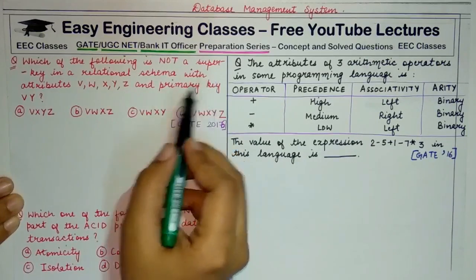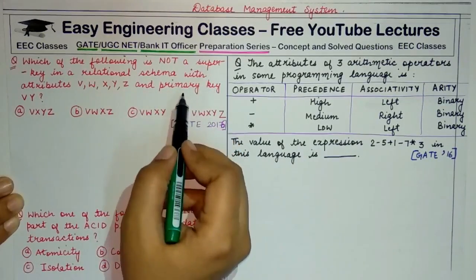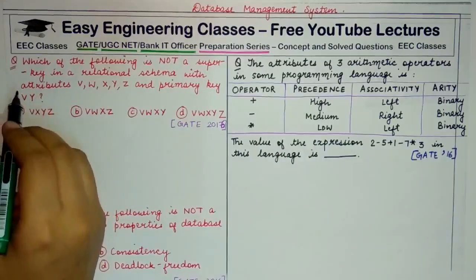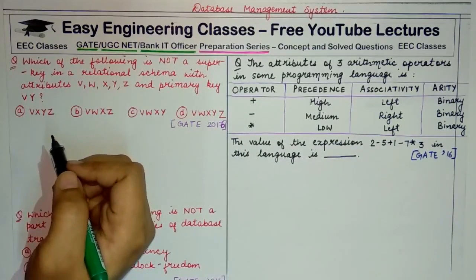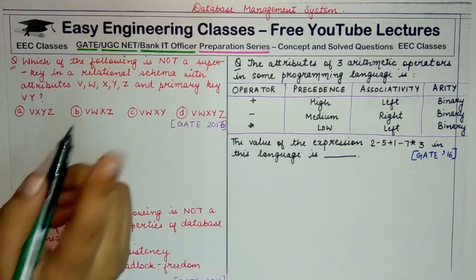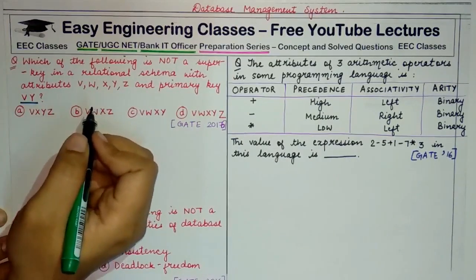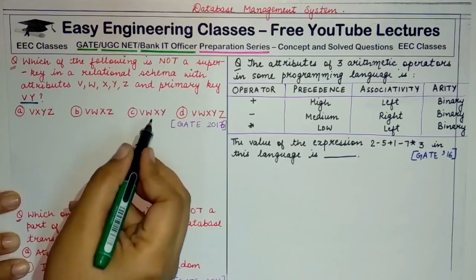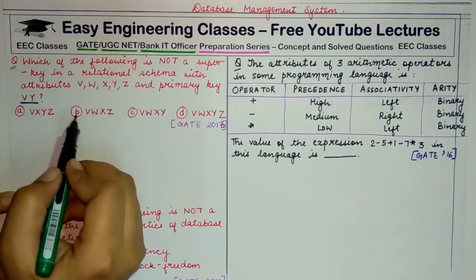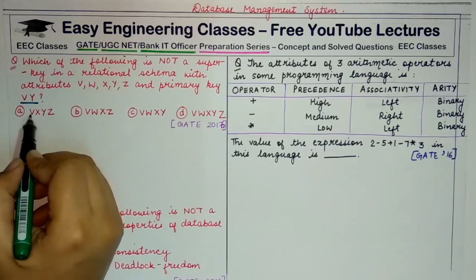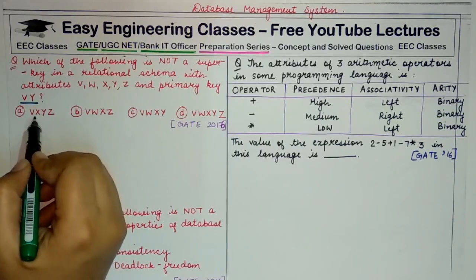Whenever you think about super key and primary key relation, you must know that a primary key is always a subset of a super key. It may be a proper subset or equal to the super key, but generally a super key is a superset of a primary key. So the super key will always contain the attributes present in the primary key as well as some other redundant attributes. Each option must at least have the primary key attributes V and Y. Option A has V and Y, with redundant attributes X and Z.